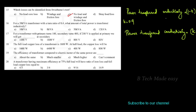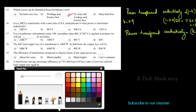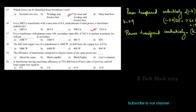Power transferred inductively is equal to 12 kVA. The equation to calculate power transferred inductively uses the turns ratio k, and with k = 0.4, the inductively transferred power works out to 12 kVA.